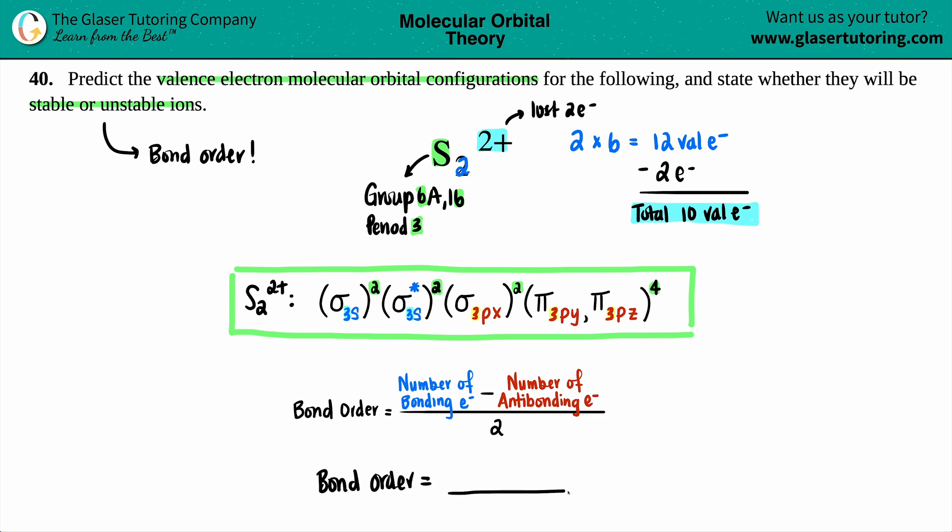So bond order is going to be something minus something else divided by two. We now just need to know what is going on in here. The easiest one to figure out first is your antibonding. The antibonding, remember, is always the one that has the stars. So if your molecular orbital has a star in it, that goes for the antibonding. It seems like here there's only one star that I see. These other guys, they don't have any stars in the upper right hand corners, so there's two antibonding electrons, so this number would be a two.